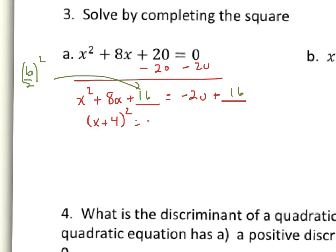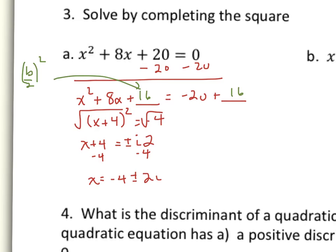So negative 20 plus 16 is negative 4, giving (x + 4)² = −4. Here's why MAF didn't work — I need the square root of a negative. When you take the square root of a negative, you pull out an i. So square-rooting both sides gives ±√(−4) = ±i√4 = ±2i. So x + 4 = ±2i, and subtracting 4 from both sides gives x = −4 ± 2i. That's the final answer obtained by completing the square.